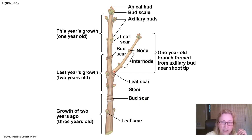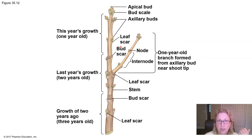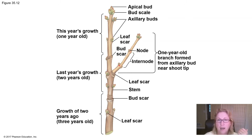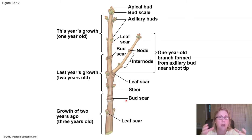Here is a woody stem where we can see last year's growth and new growth. We have nodes and internodes where leaves are growing. On a new one-year branch there's no secondary growth yet — it's growing from the tip. But further down, in second-year growth, the branch is getting wider through secondary growth.